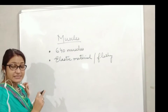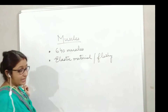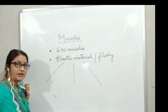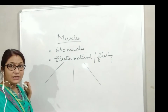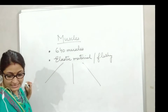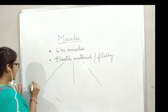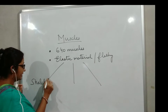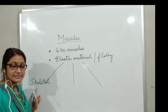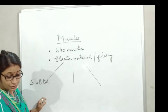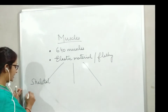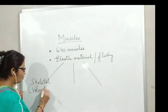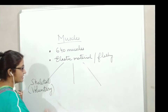These muscles are of three types. Number one is called the skeletal muscles, also known as voluntary muscles.